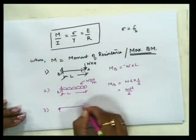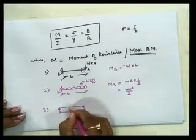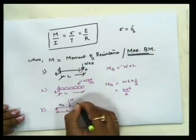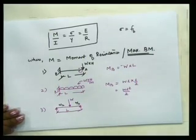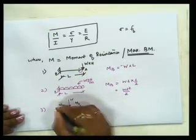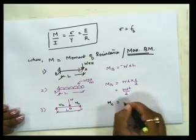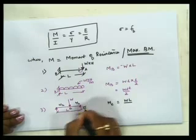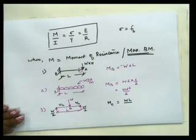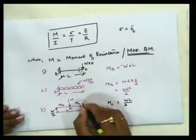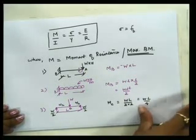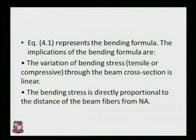Third case: a simply supported beam subjected to a central point load W kilo-newtons, so each half-span is L/2. The maximum bending moment is at the center because at supports the moment is 0. The reaction is W/2 at each support. Taking the moment at center: (W/2) × (L/2) = WL/4. So M_max = WL/4.